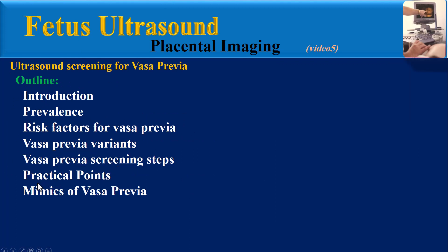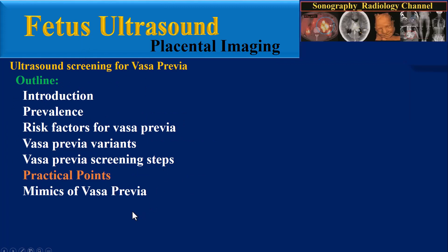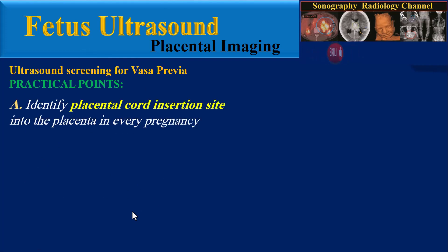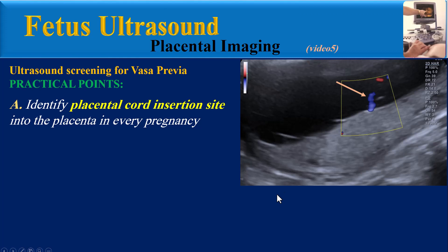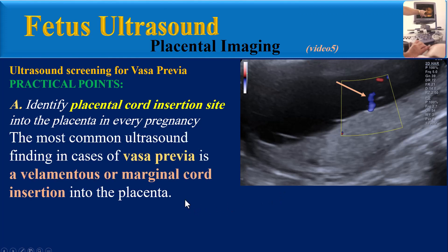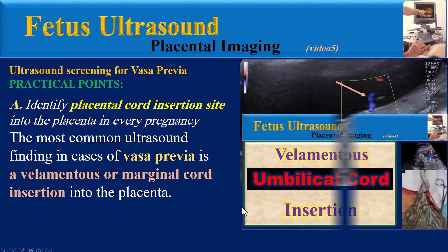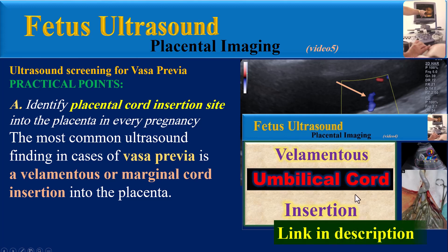There are important practical points for screening Vasa Previa. First, identify the placental cord insertion site into the placenta in every pregnancy. The most common ultrasound finding in cases of Vasa Previa is a velamentous or marginal cord insertion into the placenta. A full explanation was provided in video 4 of this series, and its link is placed in the description section.